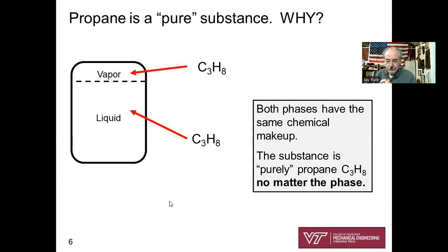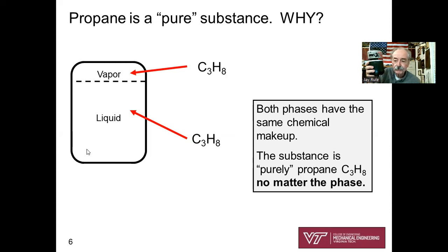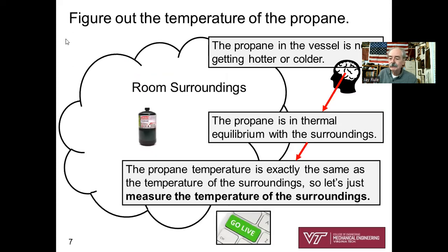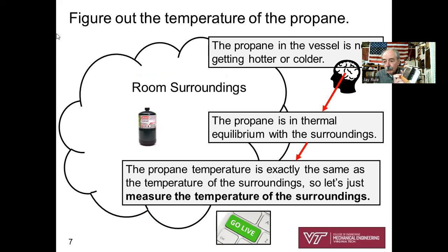Propane is also called a pure substance. For our example problem, we've got liquid and vapor, but the chemical makeup of both the vapor phase and the liquid phase is exactly the same — C3H8. All the phases have the same chemical makeup, which is why we call it a pure substance: the substance is purely propane no matter what phase it is in. That's a key concept to put in your memory, not just on a formula sheet.